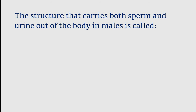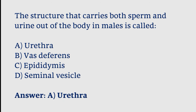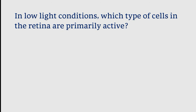The structure that carries both sperm and urine out of the body in males is called: urethra, vas deferens, epididymis, or seminal vesicle. The correct answer is option A. The structure that carries both sperm and urine out of the body in males is called the urethra.